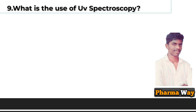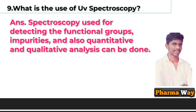What is the use of UV spectroscopy? Answer: UV spectroscopy is used for detecting functional groups and impurities, and qualitative and quantitative analysis can also be done.